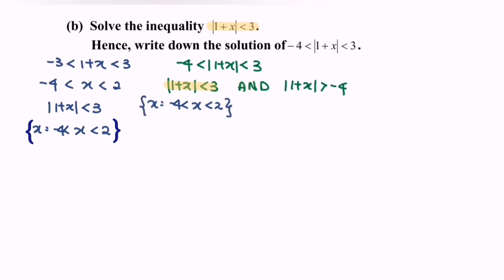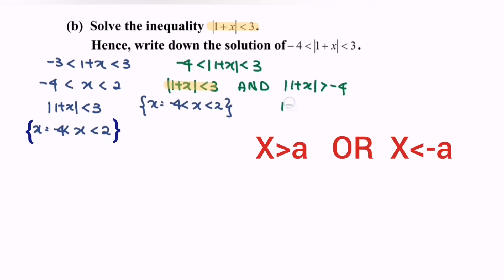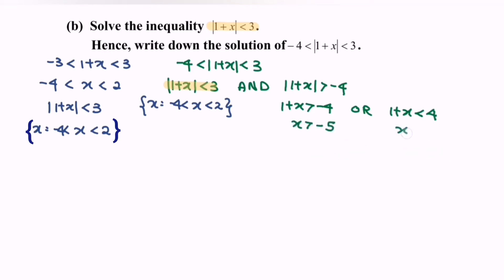Now kindly focus on the right-hand side. Based on the definition, we have 1 plus x greater than negative 4, or 1 plus x less than negative 4. So x will be greater than negative 5, and x will be less than 3.